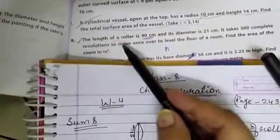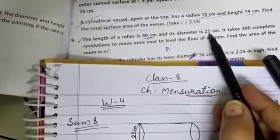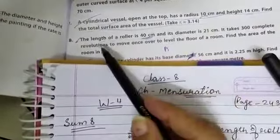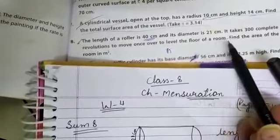Worksheet 4, sum number 8. The length of a roller is 40 cm and its diameter is 21 cm. It takes 300 revolutions to move once over to level the floor of a room.